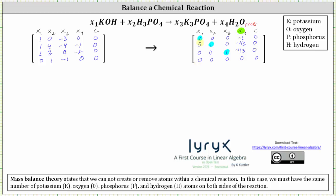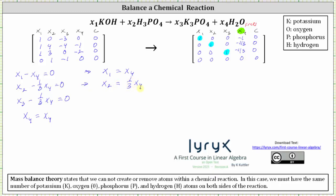From the RREF matrix, we write the corresponding equations for each row. Row one gives x sub one minus x sub four equals zero. Row two gives x sub two minus one-third x sub four equals zero. Row three gives x sub three minus one-third x sub four equals zero. The fourth row is all zeros, so there is no equation. Since x sub four is a free variable, we solve x sub one, x sub two, and x sub three in terms of x sub four: x sub one equals x sub four, x sub two equals one-third x sub four, and x sub three equals one-third x sub four.